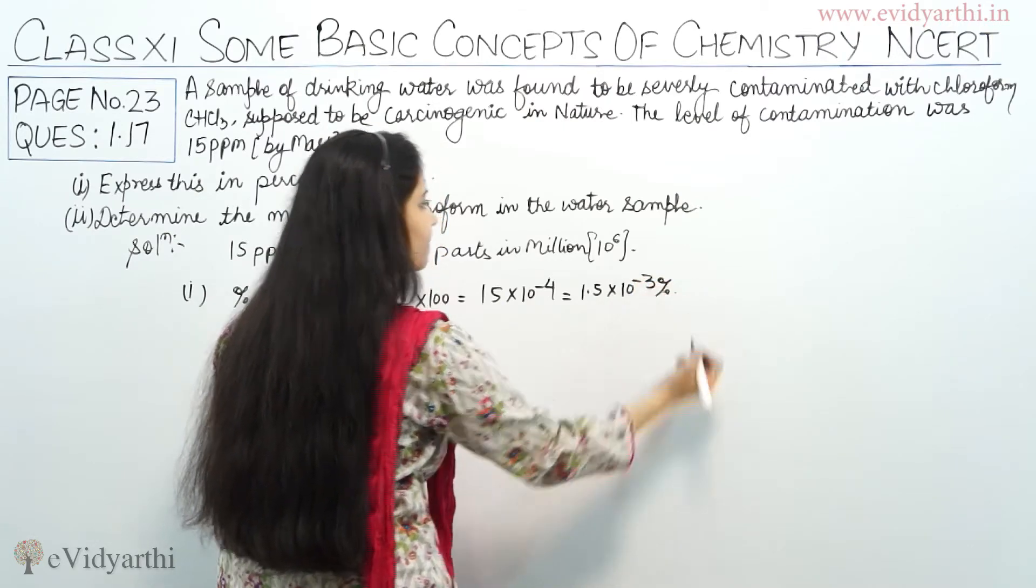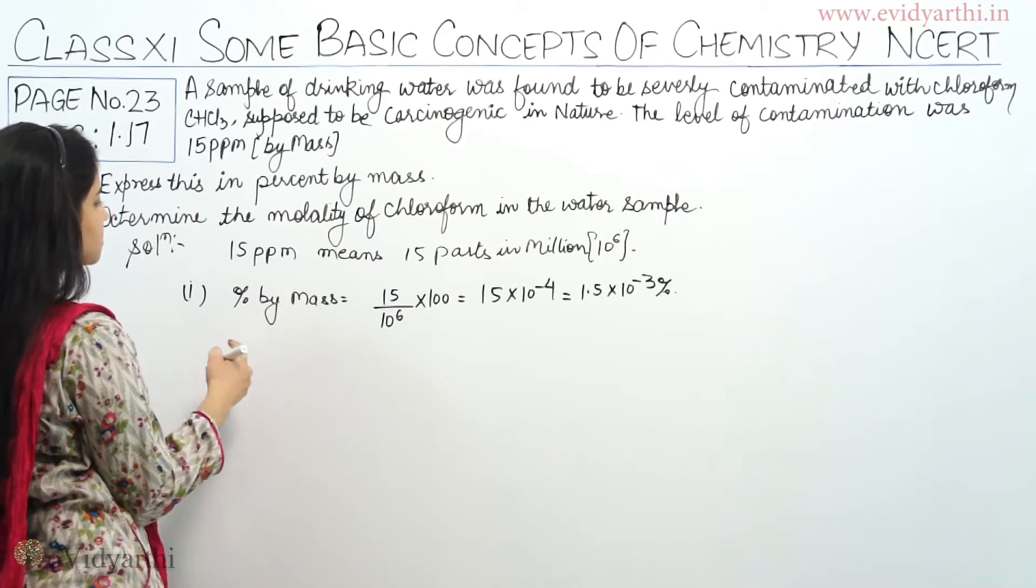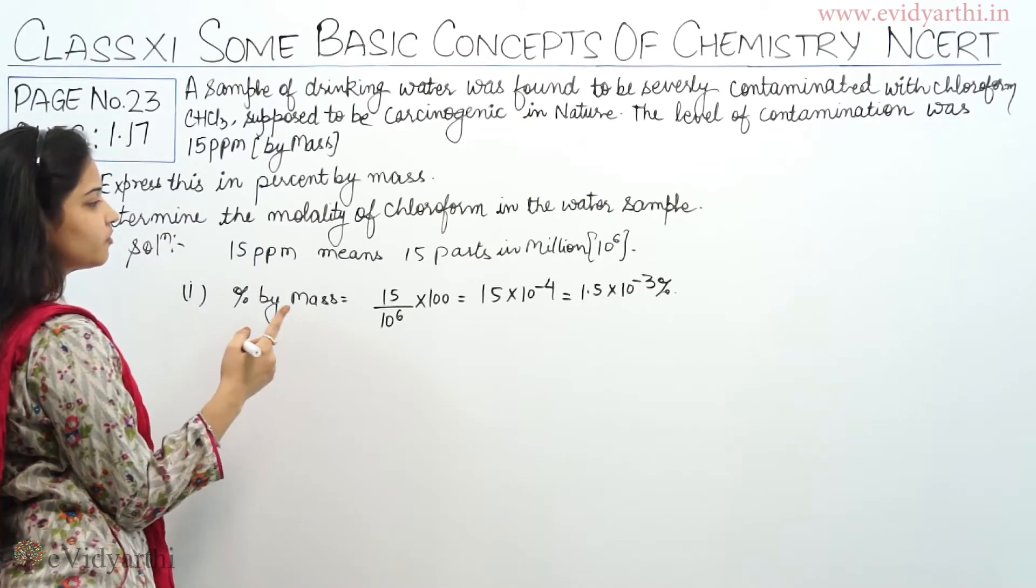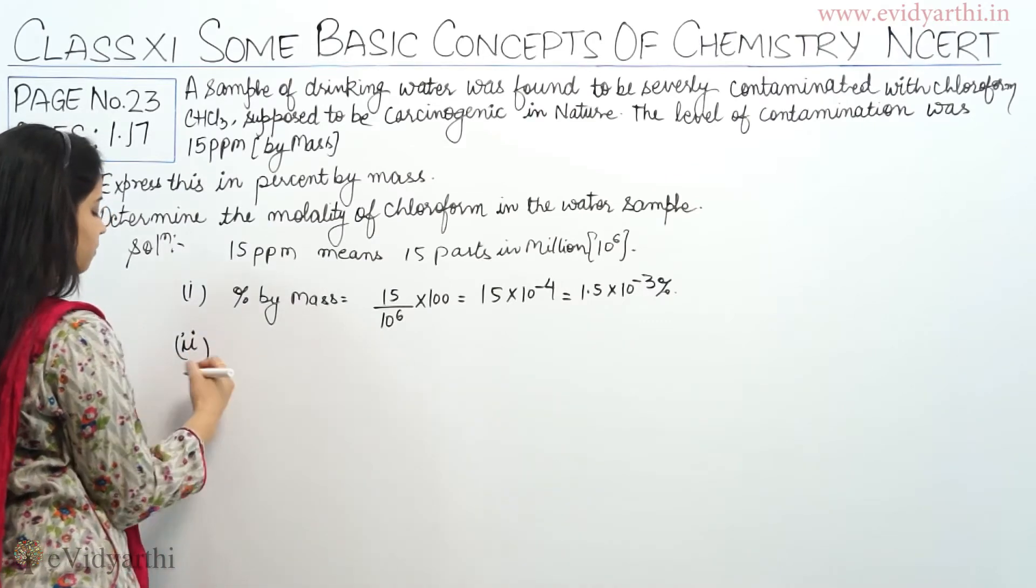Now this is the percent by mass, 1.5 into 10 raised to power minus 3 percent. Coming to the second, determine the molality of chloroform in the water.